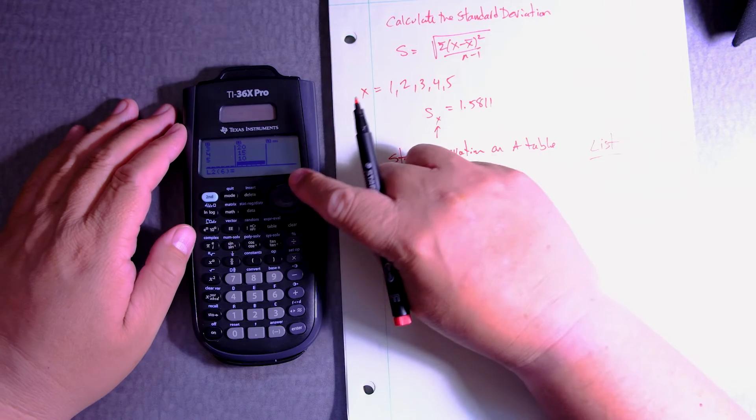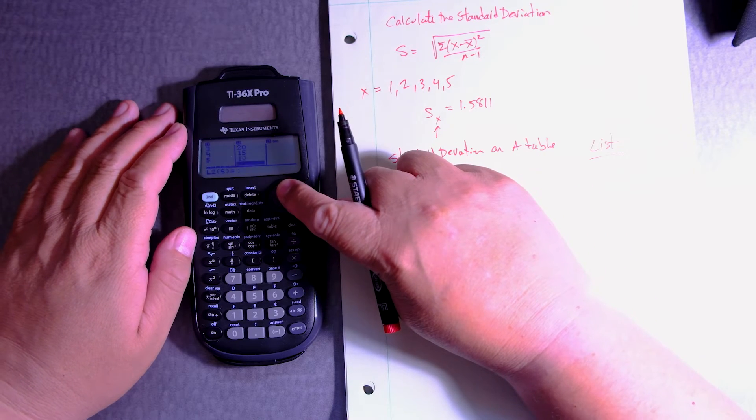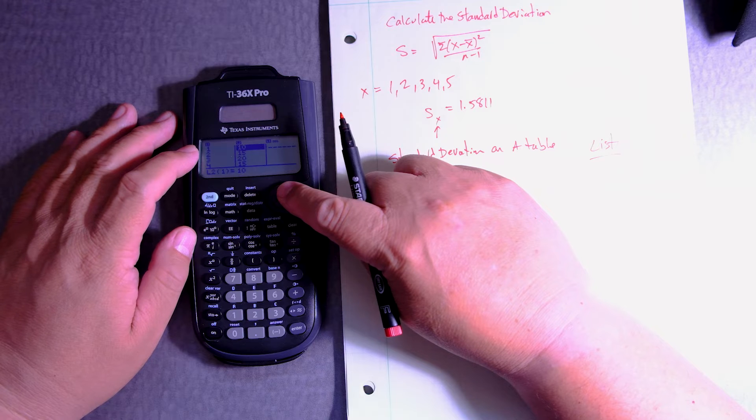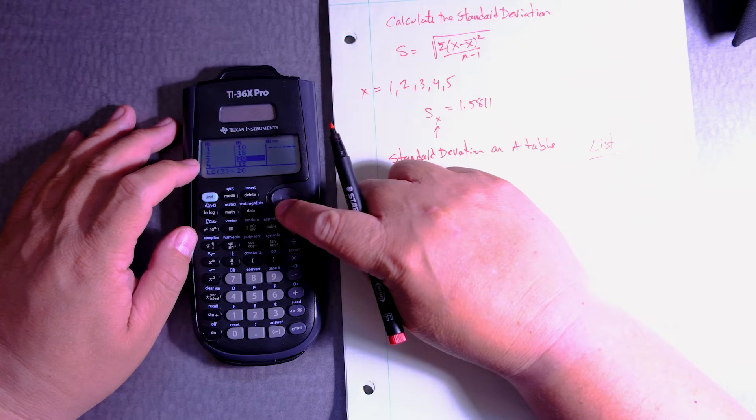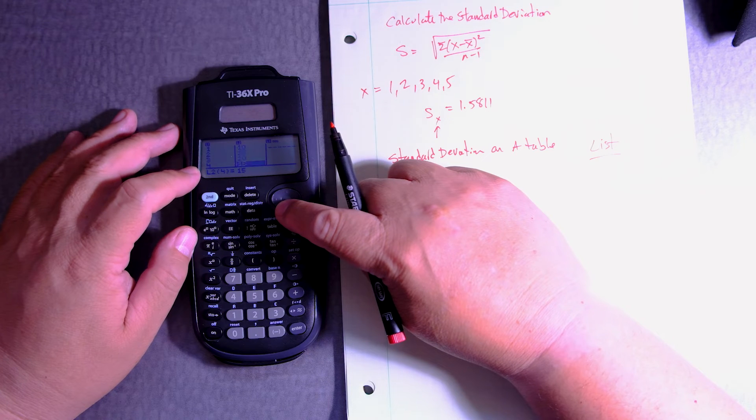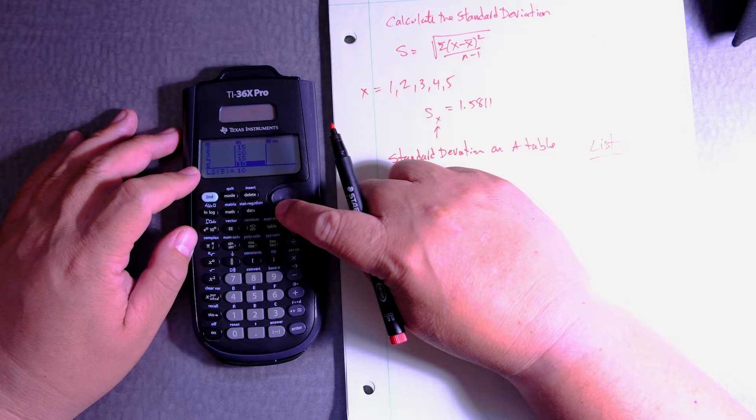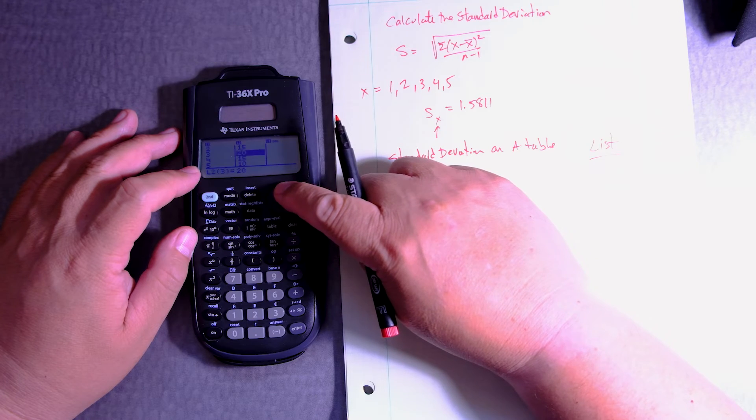Always good to check to see if you entered the values right. All right, so 1, 10, 2, 15, 20, 15, 4, 15, 5, 10. Okay, that looks correct.